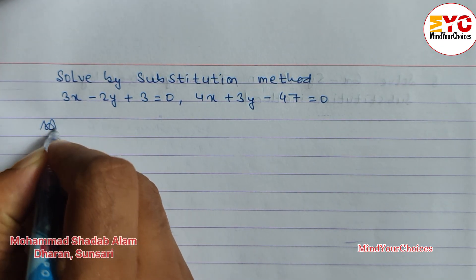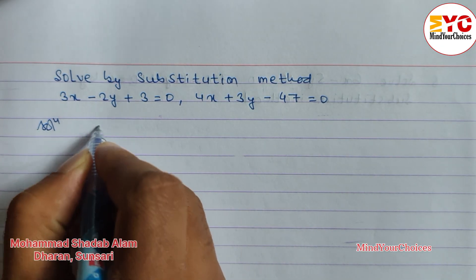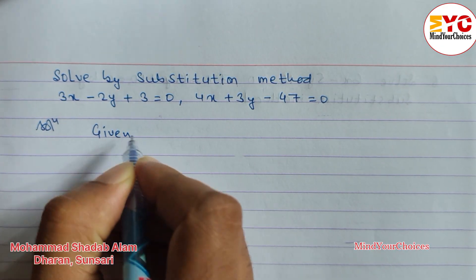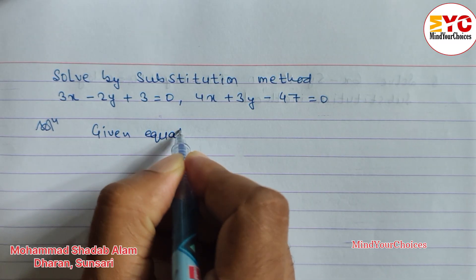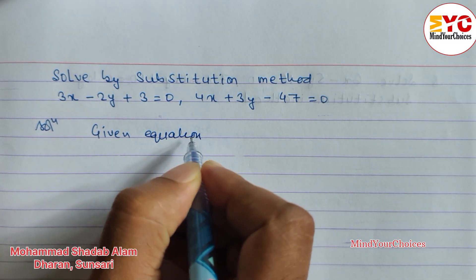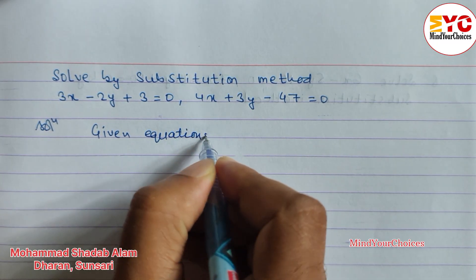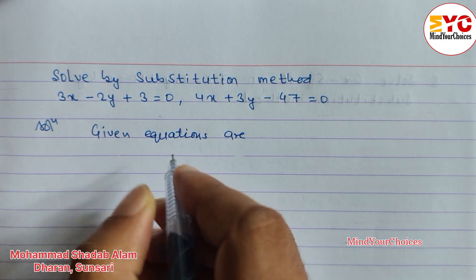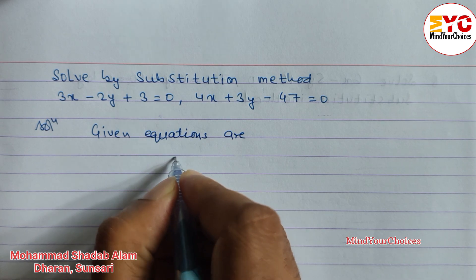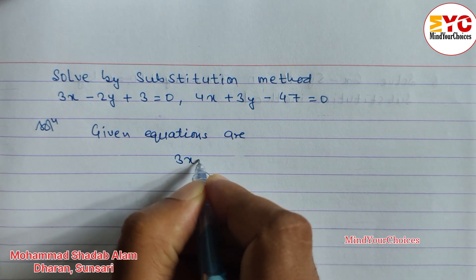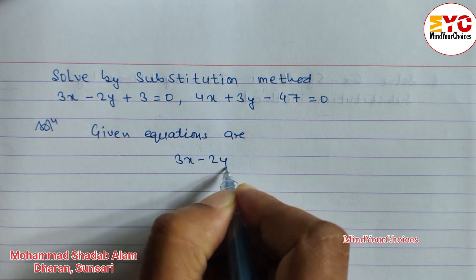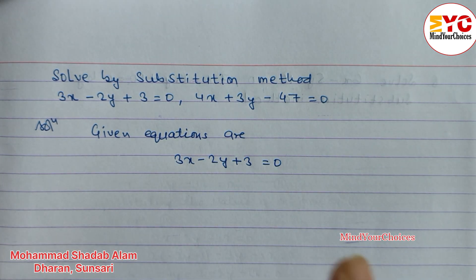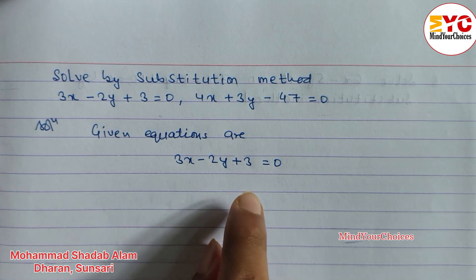Let's take a start. The given equations are: 3x minus 2y plus 3 is equal to 0.